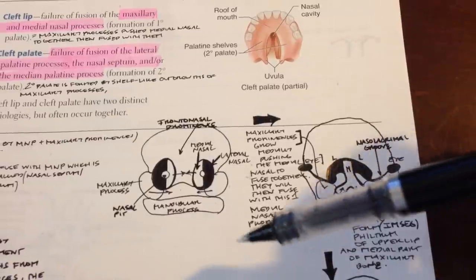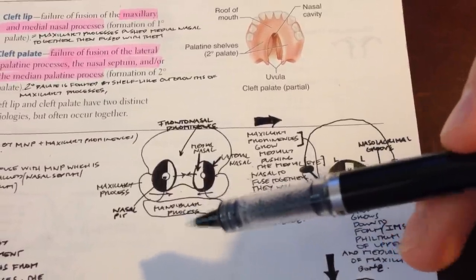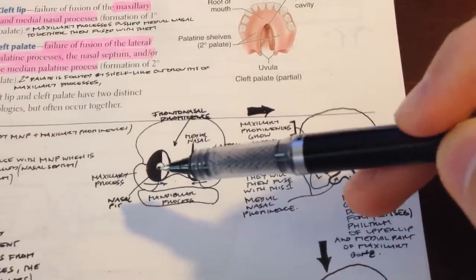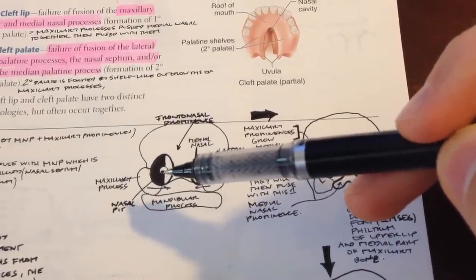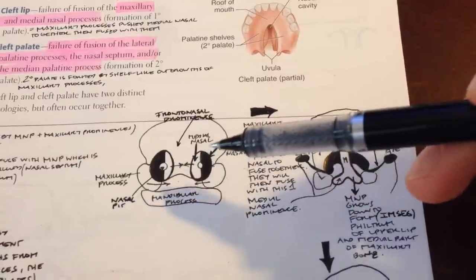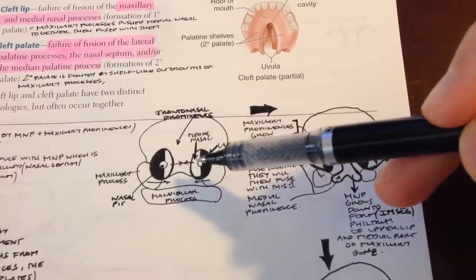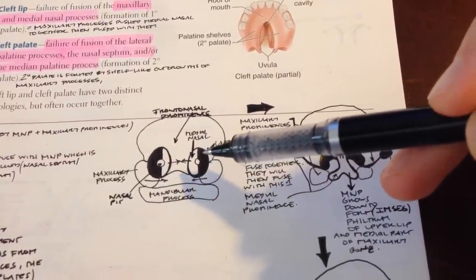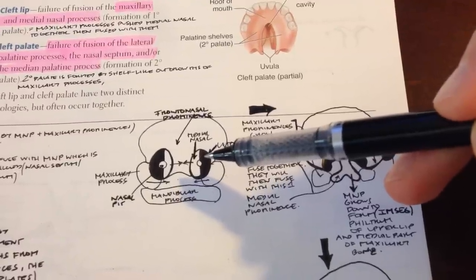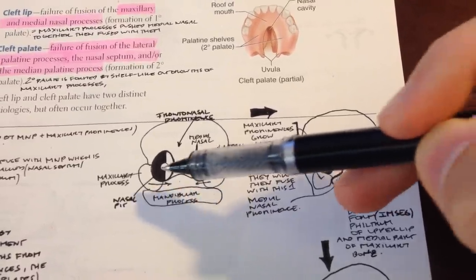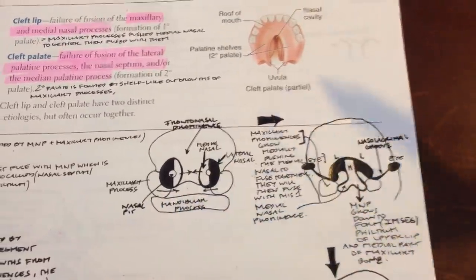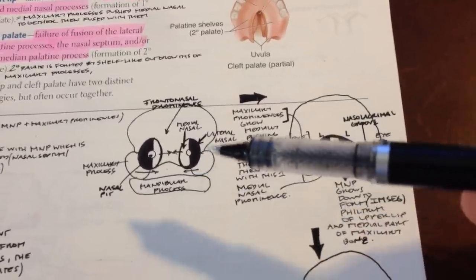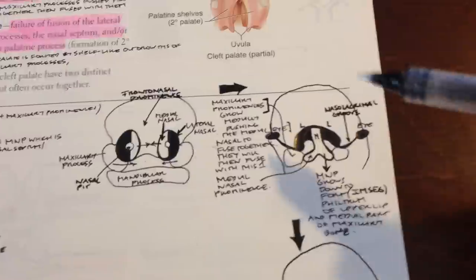The nasal placode is ectoderm, and this invagination occurs around the fifth week. This is an important step because this invagination of the nasal placode forming the nasal pit gives you the medial nasal prominence and the lateral nasal prominences, seen on one side and on the other. This is important for understanding the pathology of cleft lip and palate.